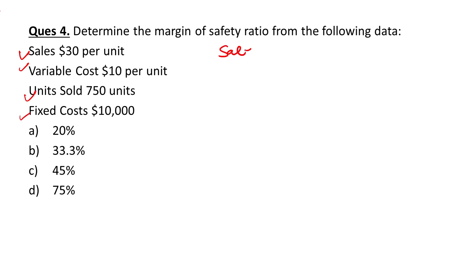There was a typing error. Sales minus variable cost equals contribution. Sales is $30 per unit, variable cost is $10 per unit, so contribution is $20 per unit. Now we have the sales, variable cost, units sold, fixed cost, and contribution.